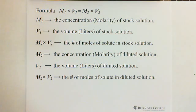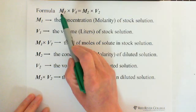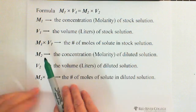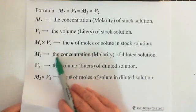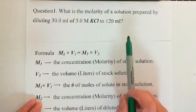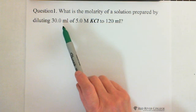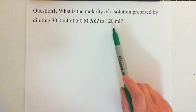So when we dilute, the most important thing is the solute never changes. The amount of solute before dilution equals the amount of solute after dilution. Now let's look at three questions. The first question is: what is the molarity of a solution prepared by diluting 30.0 milliliters of 5 molarity potassium chloride to 120.0 milliliters?